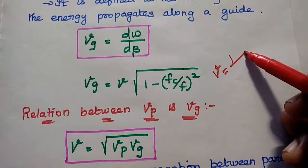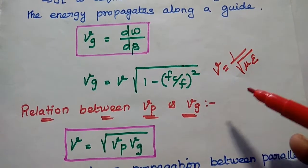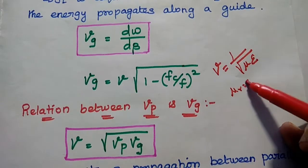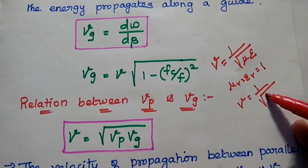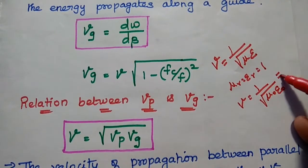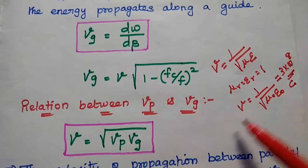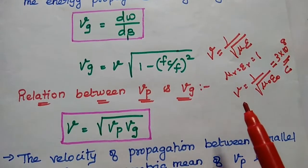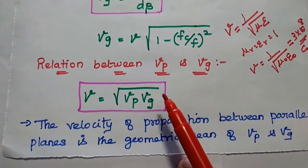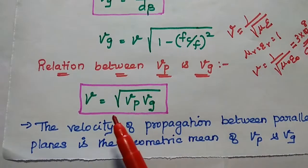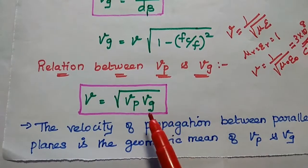The group velocity Vg represents the velocity with which energy propagates along a guide, given by Vg = dω/dβ = v × √(1 − (fc/f)²), where v = 1/√(με). In free space where μr = εr = 1, v = 1/√(μ₀ε₀) = 3×10⁸ m/s, the velocity of light. The relation between phase velocity and group velocity is v = √(Vp × Vg).